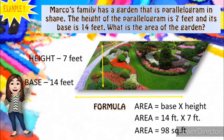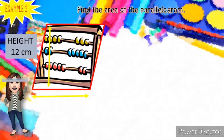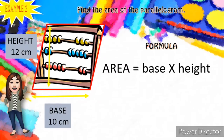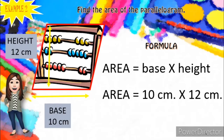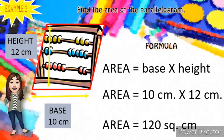Next example: find the area of the parallelogram with a height of 12 cm and a base of 10 cm. How do we find the area of a parallelogram? We use the formula: Area equals base times height. Substitute the values: base is 10 cm, height is 12 cm. Area equals 10 cm times 12 cm. The answer is 120 square cm. Do not forget to use the unit square cm. So what is the area of this parallelogram? 120 square cm.